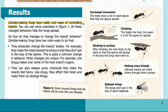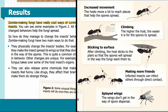Zombie-making fungi have really cool ways of controlling insects, shown in figure two — all these changed behaviors help the fungi spread. They have two main ways to change insect behavior: they physically change the insects' bodies — for example, making the insect spread its wings so they don't get in the way of the spores. Other changes are unique; for example, one fungus takes over some of the host insect's organs. They can also release chemicals that affect the insect's brain and make them do strange things, like drugs. In figure two, the behaviors shown include increased movement — the host moves a lot to reach places that help the spores spread.